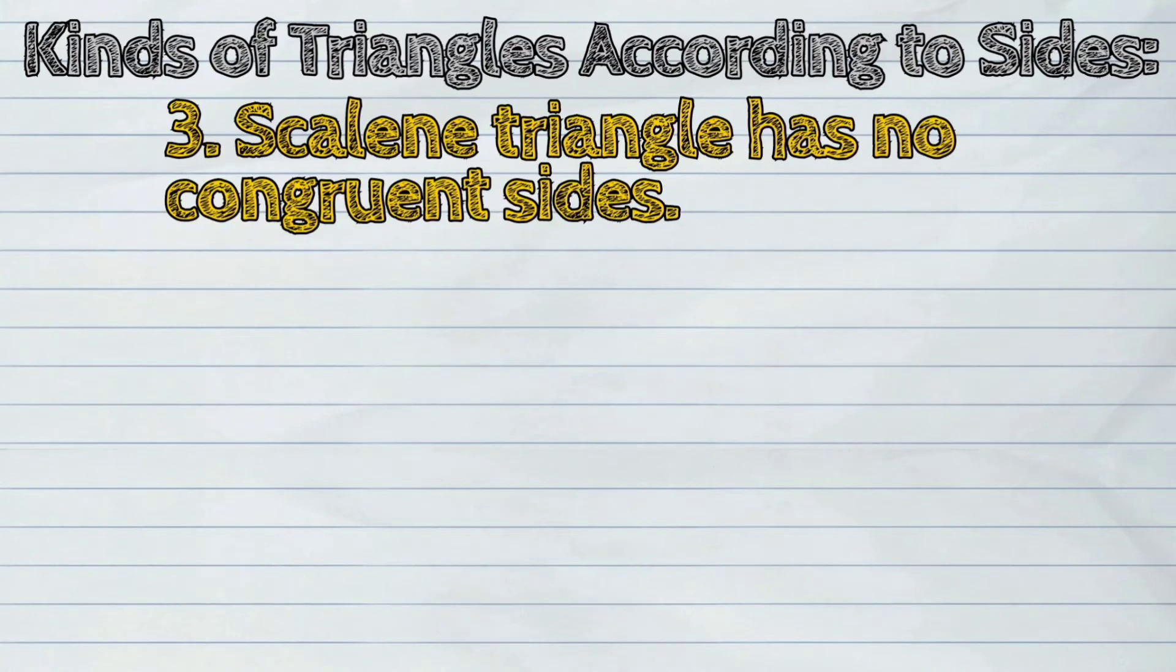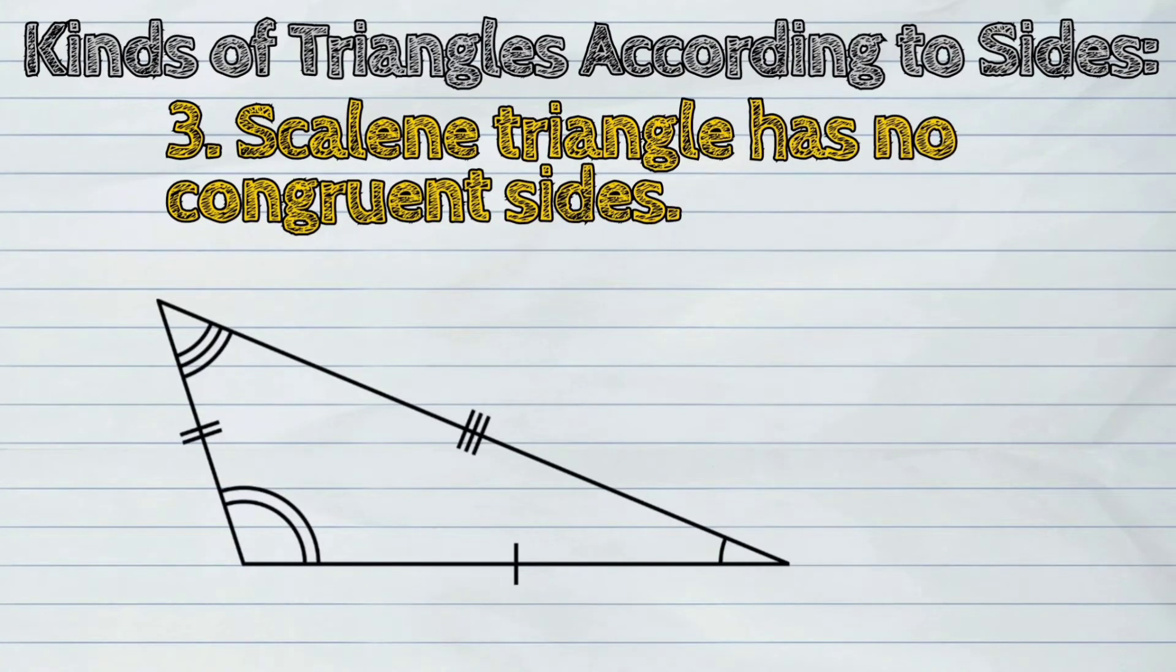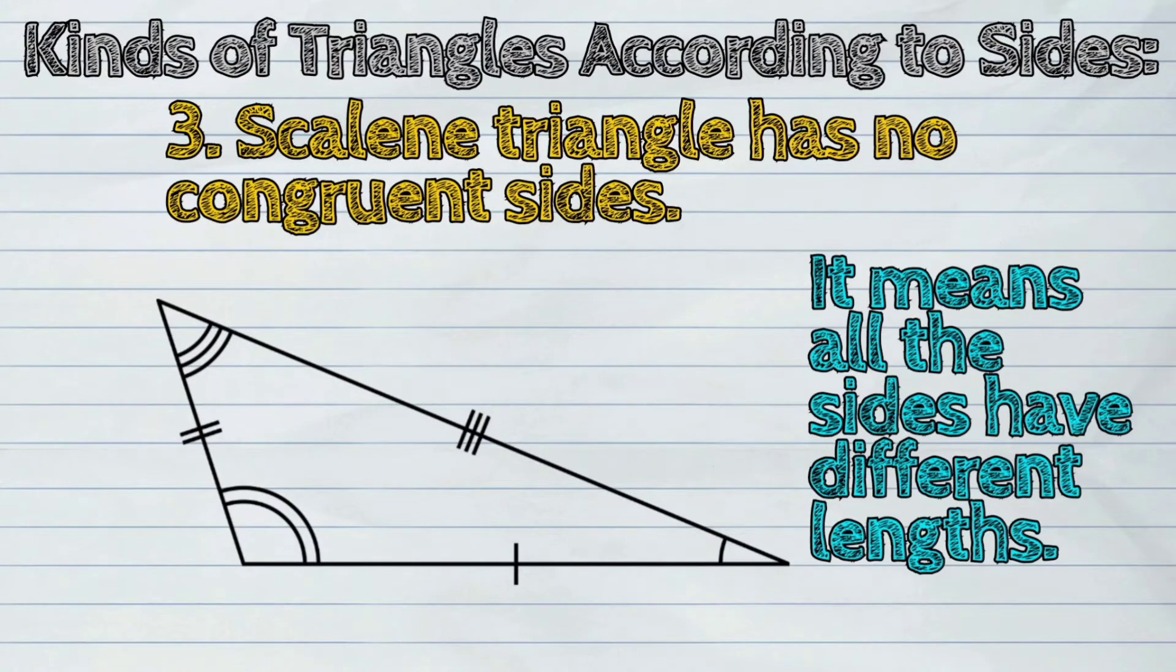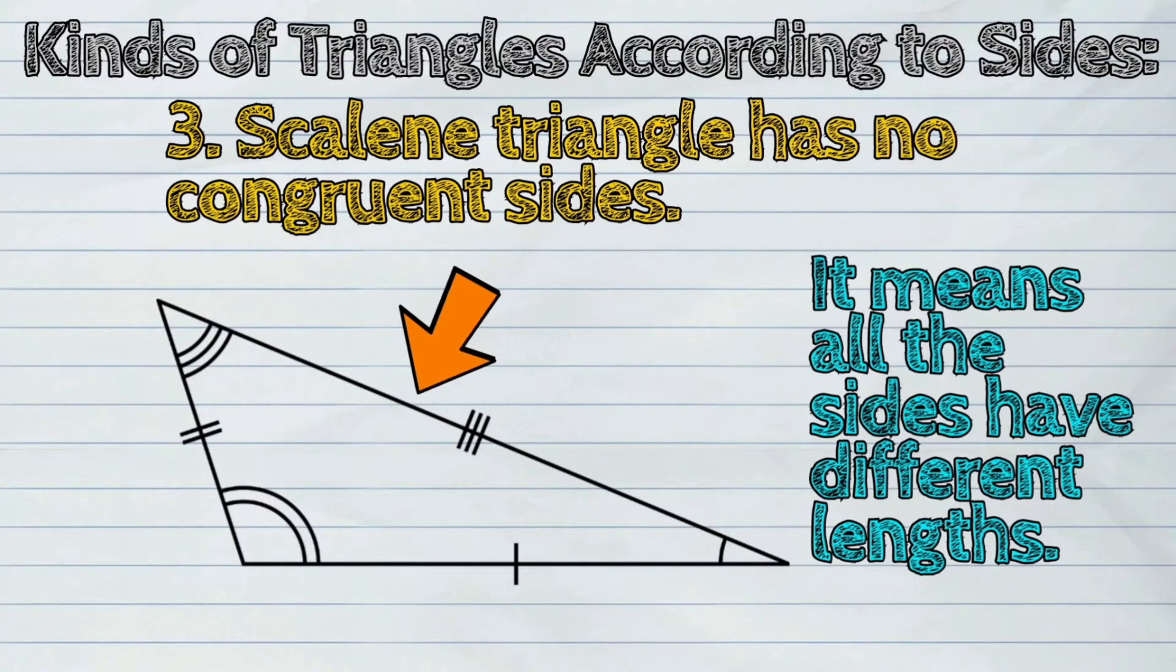Scalene triangle has no congruent sides. It means all the sides have different lengths.